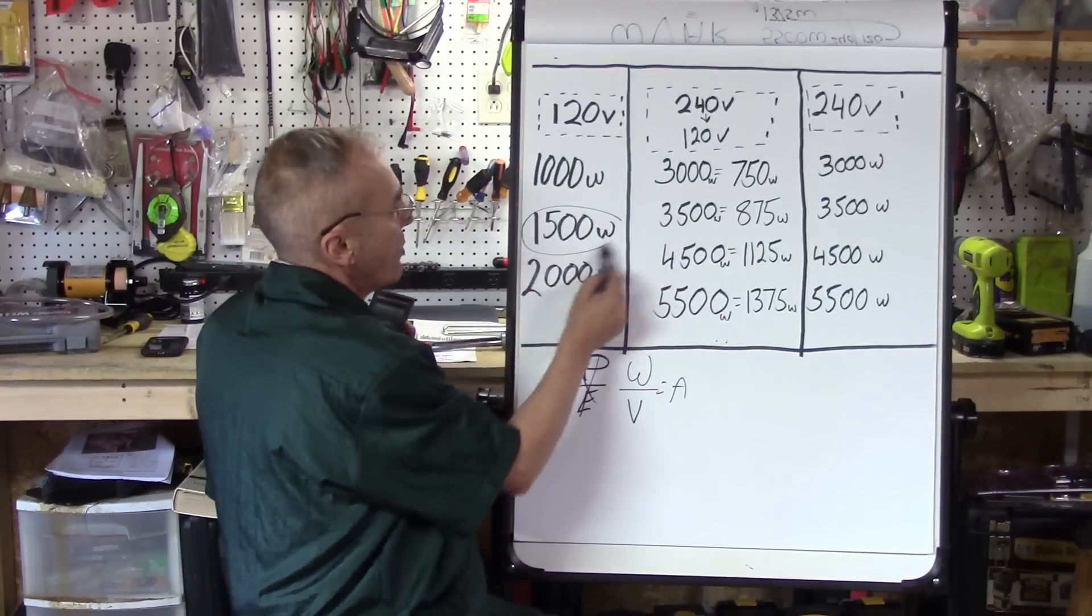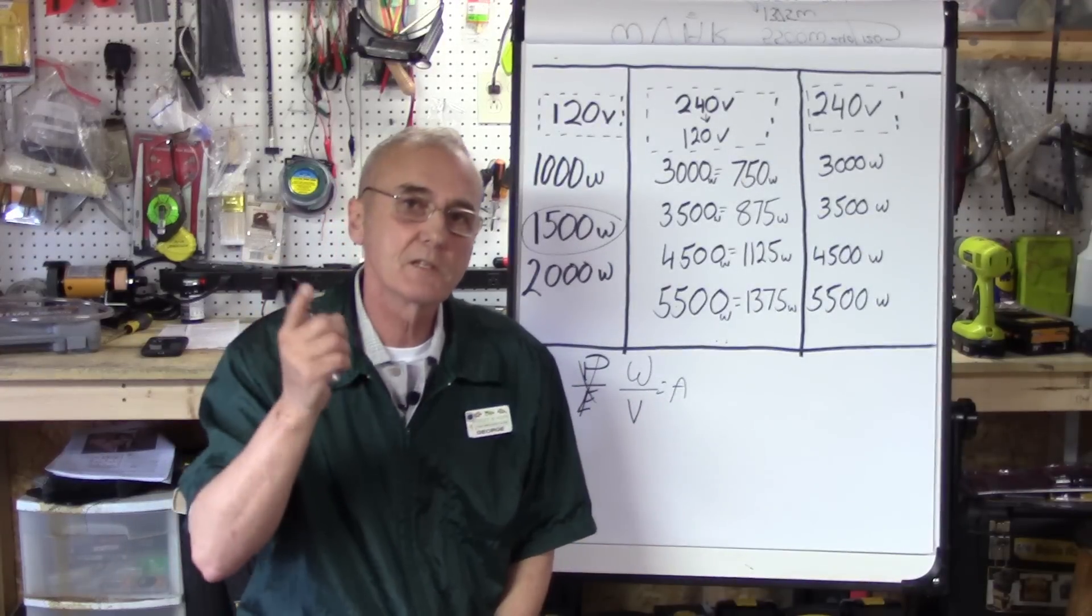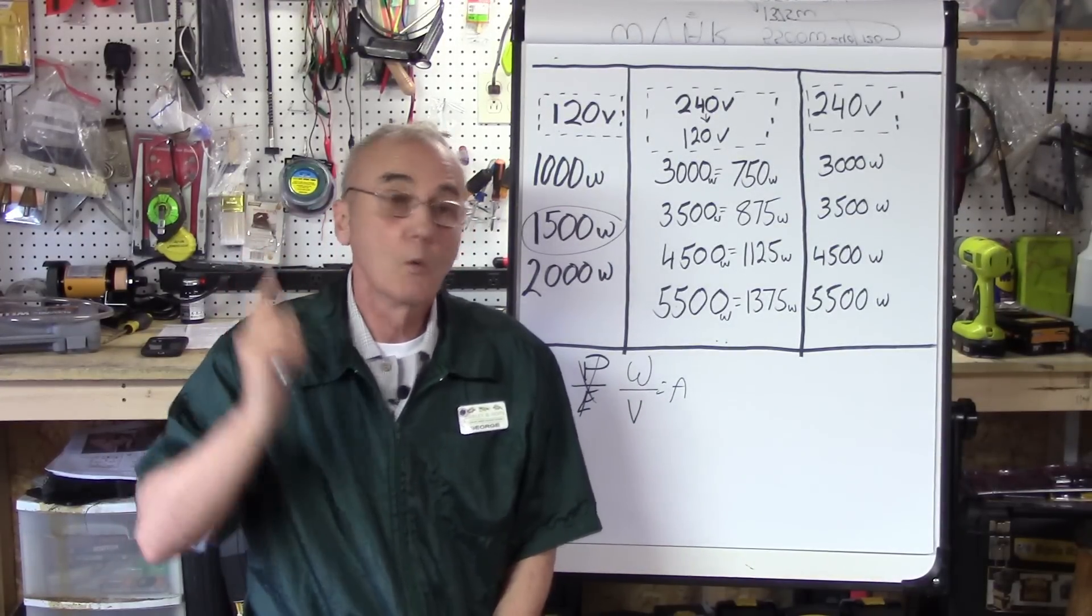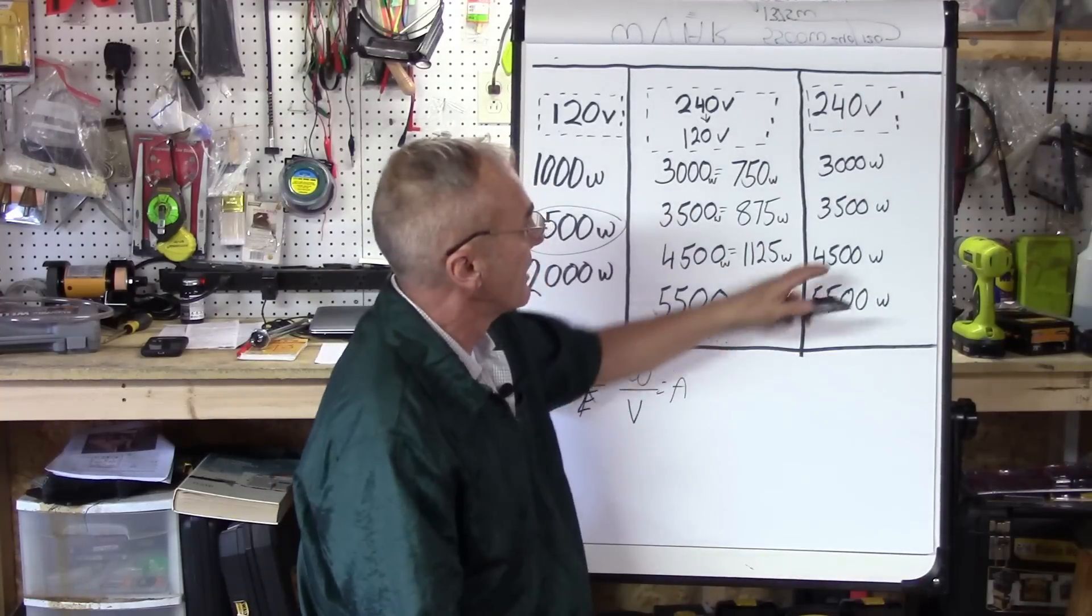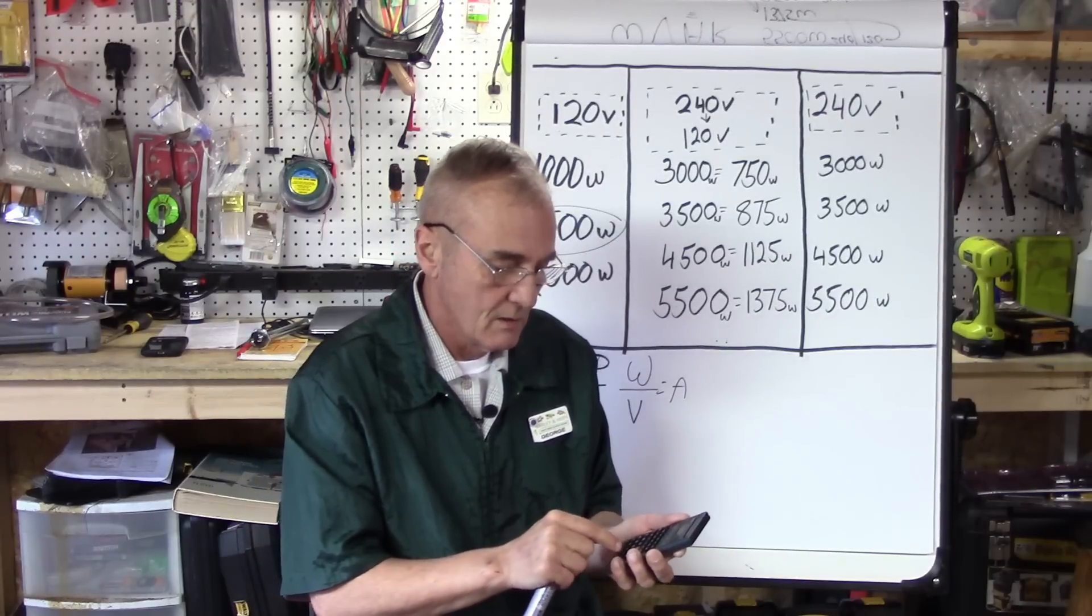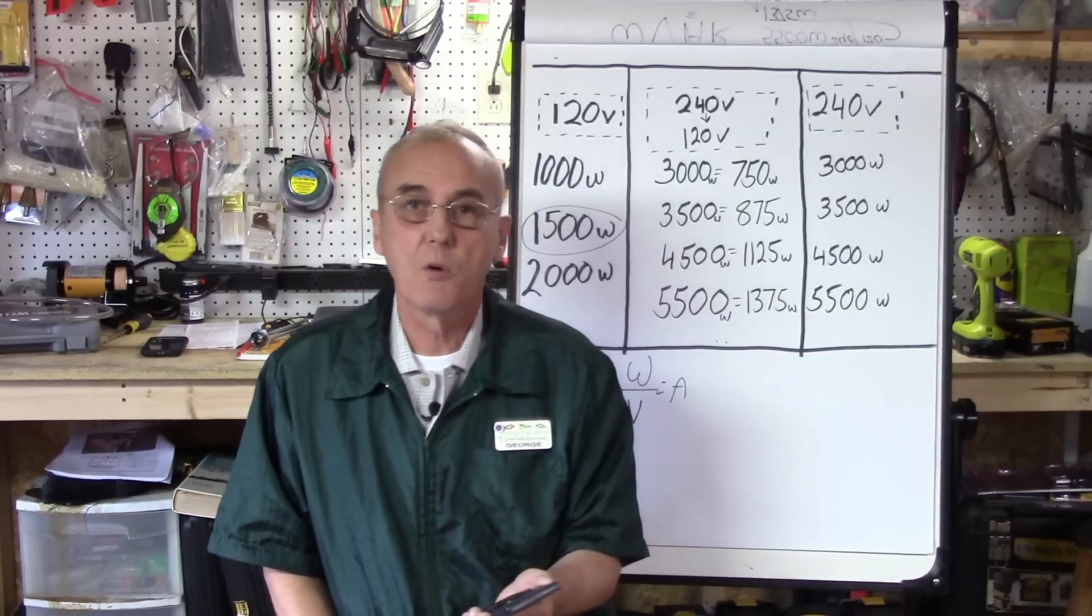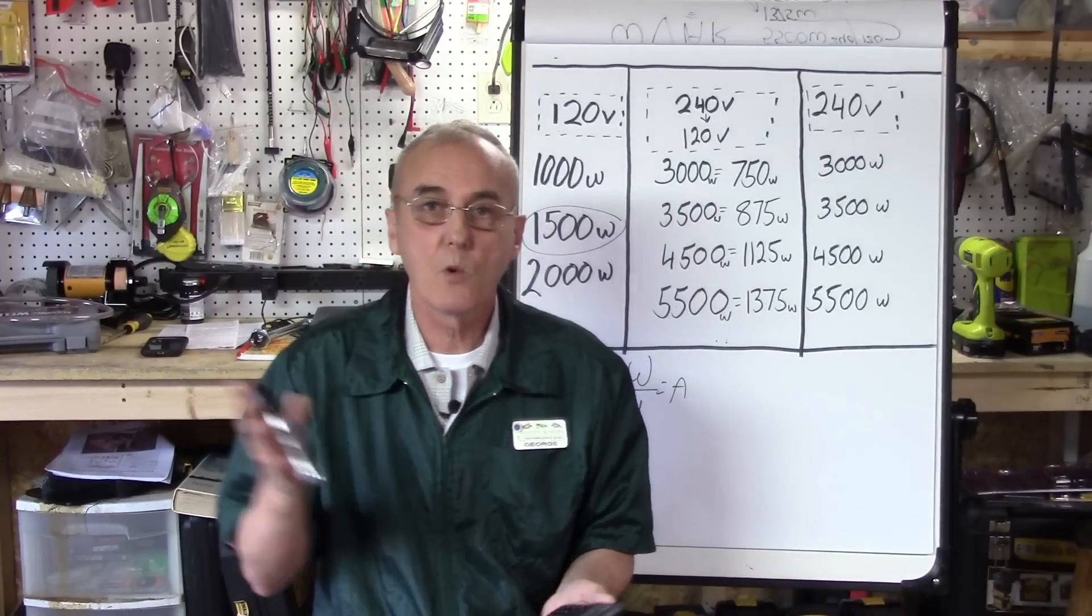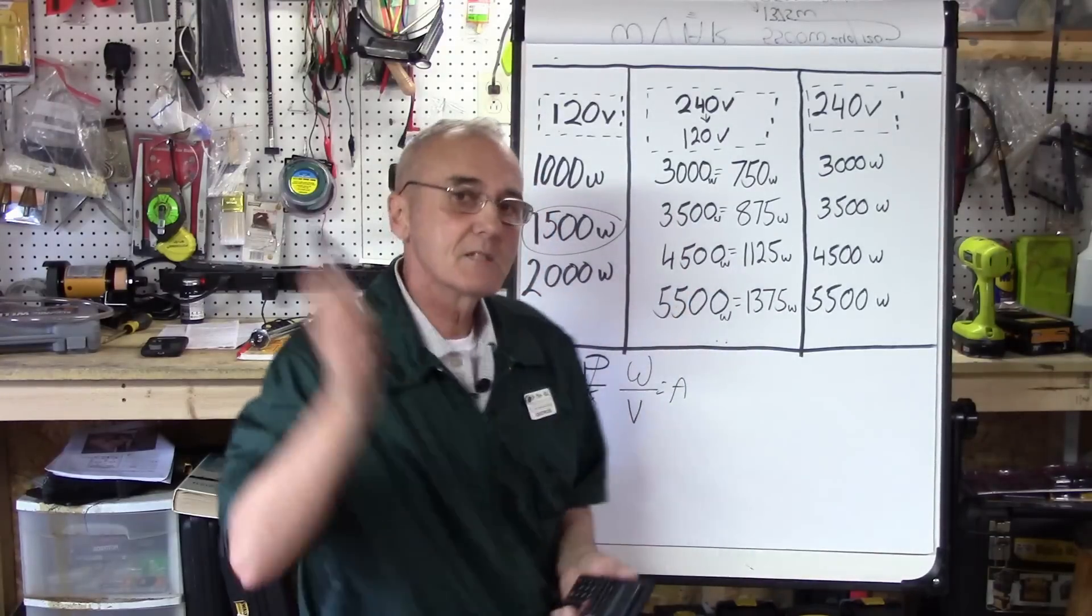Remember, wattage divided by voltage: 1500 divided by 120 equals 12.5 amps. So this one would be 12.5 amps on that 20 amp circuit—you're safe. Now let's do a 240 because it works the same way. We'll do the 3500 watt: 3500 divided by 240 equals 14.58 amps on that 20 amp circuit. You're good.